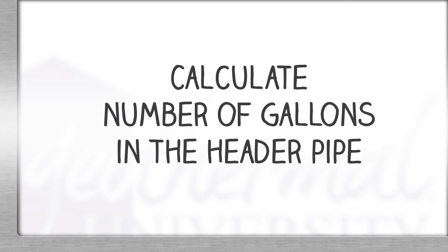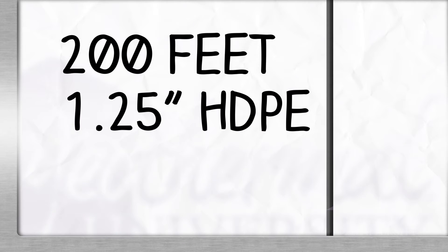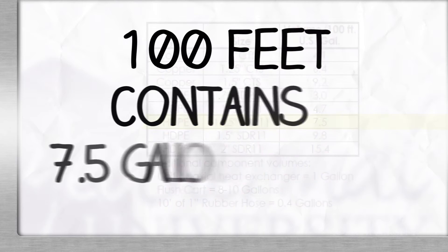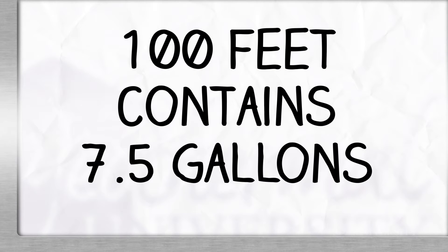Next, we'll need to calculate the number of gallons in the header pipes. In our example, our header pipe consists of 200 feet of inch and a quarter HDPE pipe. Using Table 4 in our Flow Center and Loop Application Installation Guide provided with this video, we scroll down to inch and a quarter size dimension ratio 11 or SDR 11, and we find 100 feet contains 7.5 gallons.